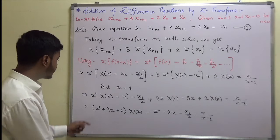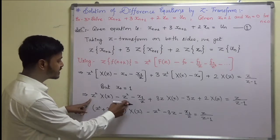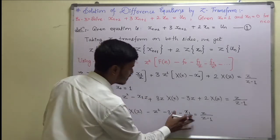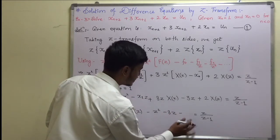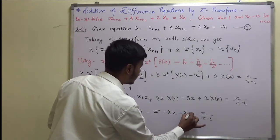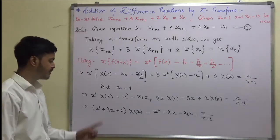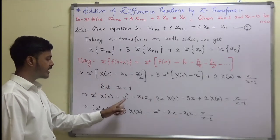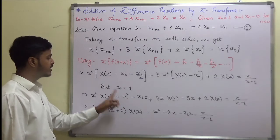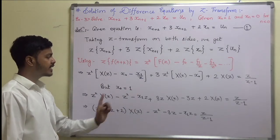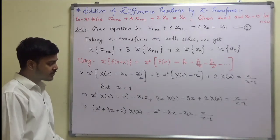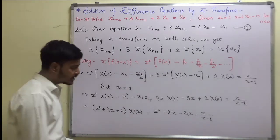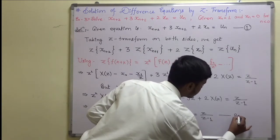(z² + 3z + 2)·X(z) - z² - 3z - x1·z = z/(z-1). Say this is equation 2.